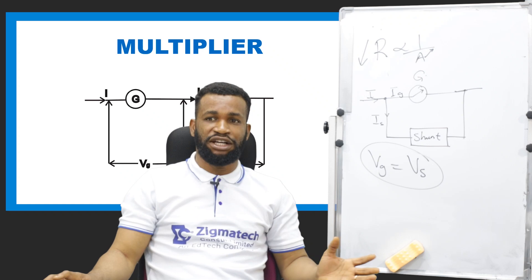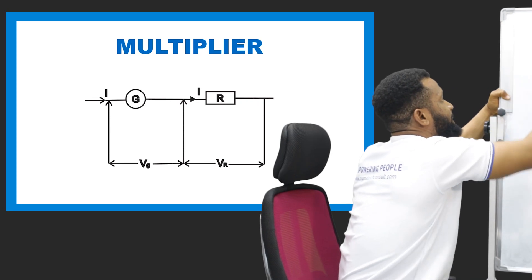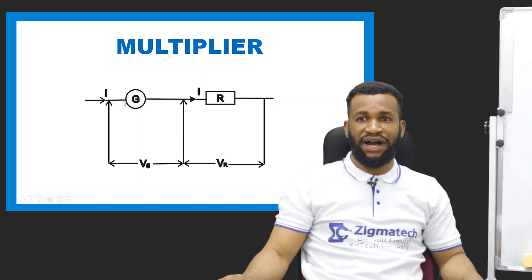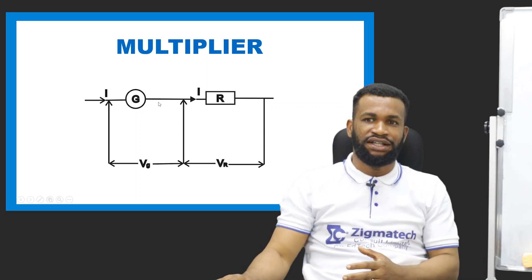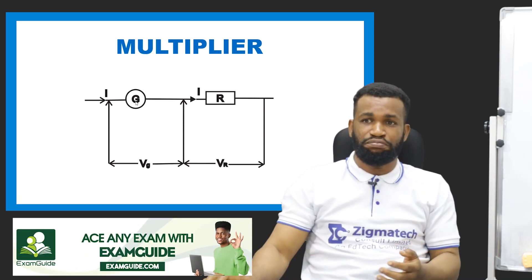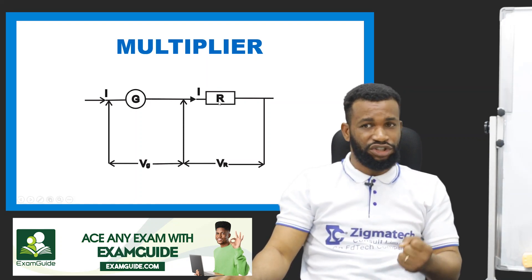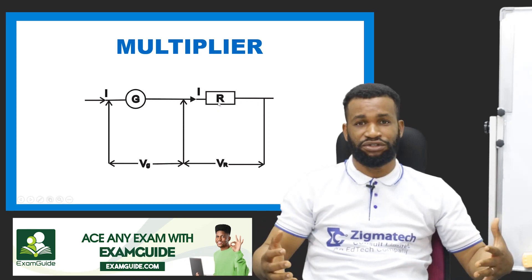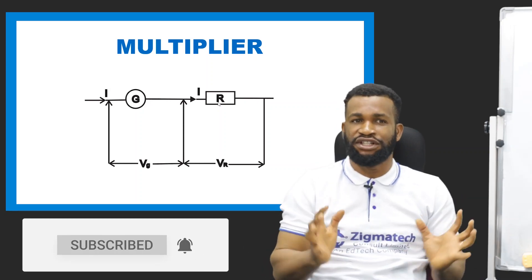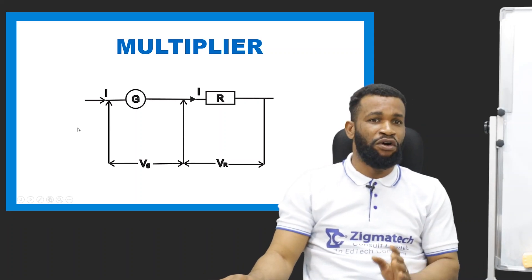When we talk about a multiplier, we are talking about a system or device that works with a voltmeter. There is a galvanometer that measures a very small voltage, but when you add another resistance, it helps the galvanometer to measure a way bigger voltage than it used to. That kind of arrangement is called a multiplier — it is for voltage.